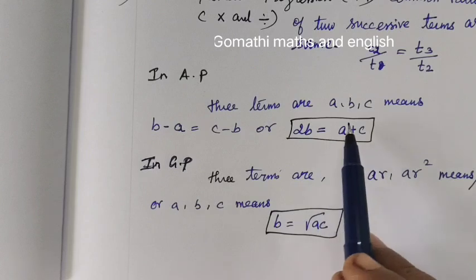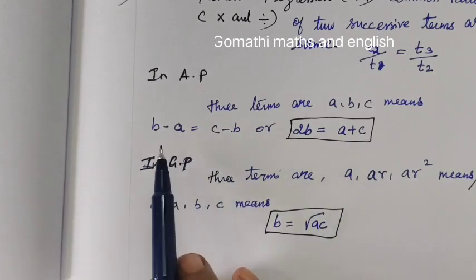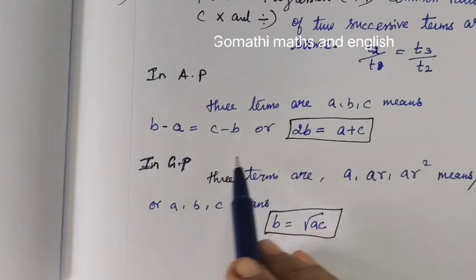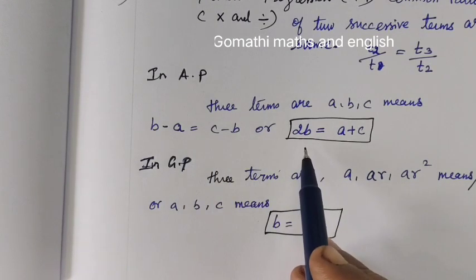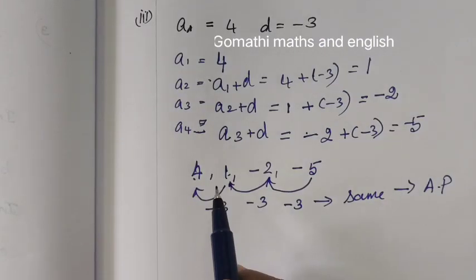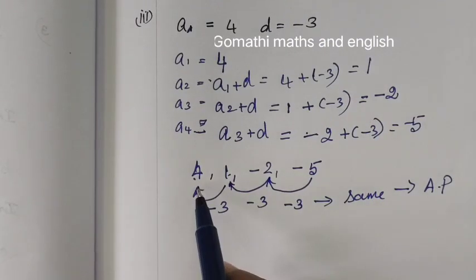Three terms are a, b, c means t2 minus t1 equal to t3 minus t2. When you simplify, you can write this as 2b equal to a plus c. Here you can check the answer.